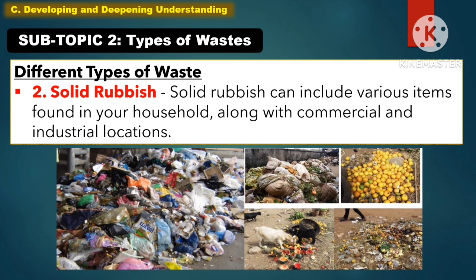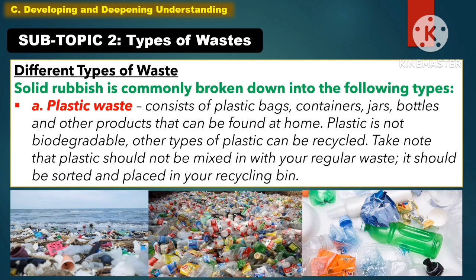Another type of waste is the solid rubbish. Solid rubbish can include various items found in your household along with commercial and industrial locations. Solid rubbish is commonly broken down into the following types. The first one is plastic waste. It consists of plastic bags, containers, jars, bottles, and other products that can be found at home. Plastic is not biodegradable, though other types of plastic can be recycled. Plastic should not be mixed in your regular waste — it should be sorted and placed in your recycling bin.